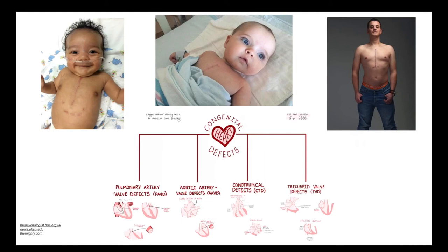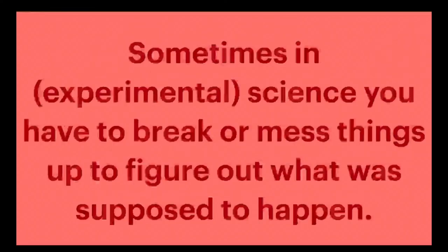Like 1% of babies born in this country — that's 300,000 babies a year. If you take nothing away from this lesson, I would appreciate if you remember this: sometimes in experimental science you have to break things or mess them up to figure out what was supposed to happen. People always talk about scientists as brilliant or being a genius or being perfect. The reality is none of us are perfect — what you really have to do in science is figure out the right way to mess things up to then know how it's supposed to work. It took me a really long time to learn that in my training.